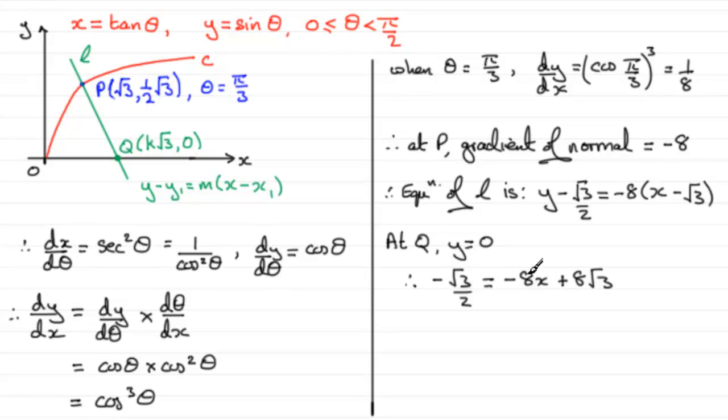And at this stage, what could we do? Well, I could add 8x to both sides, so I would have 8x over here. I could add root 3 over 2 to both sides, and I've got 8 root 3 plus another half root 3, and that's going to give me 8 and a half root 3, which is the equivalent of 17 root 3 over 2. So if I divide both sides now by 8,